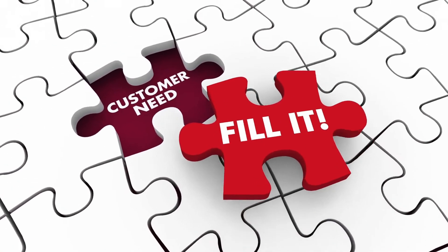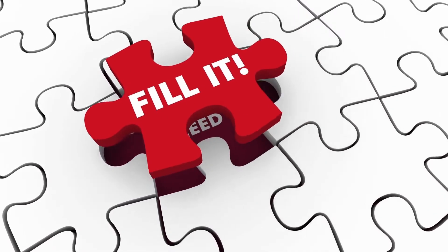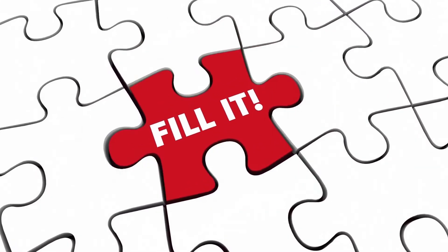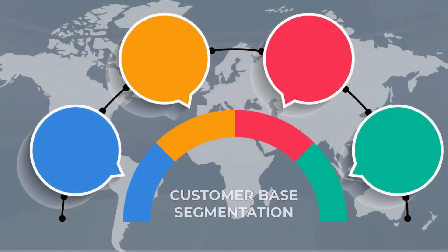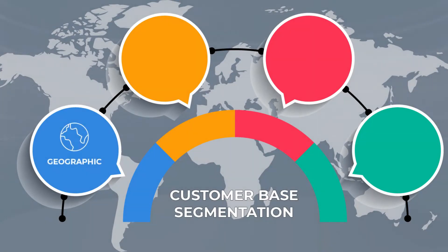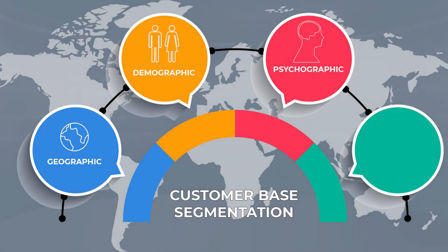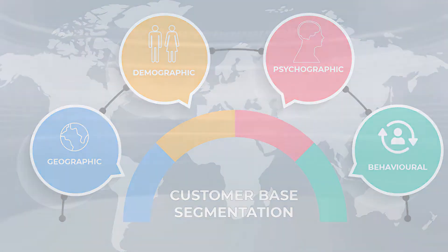These customer needs may change over time or in different situations. Companies can better address their customer needs by first breaking down their customer base into segments, then looking at which component of the supply chain needs to be adjusted to better meet the needs of each particular segment. This is what is called supply chain segmentation.